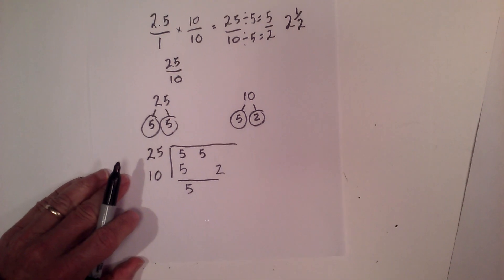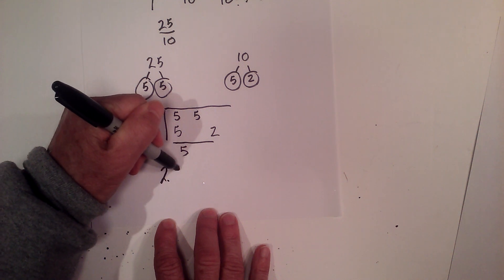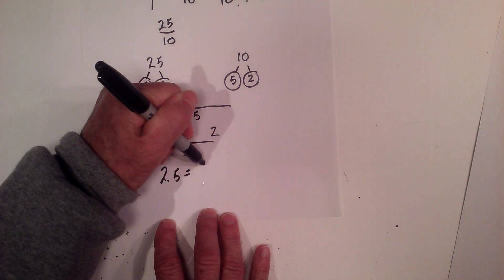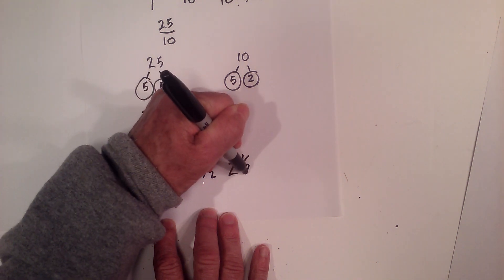Let me rewrite this completely here at the bottom so it's not messy. 2.5 equals 5 over 2 or 2 and a half.